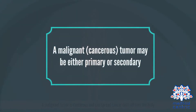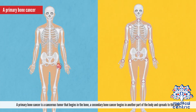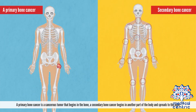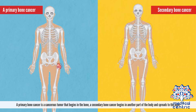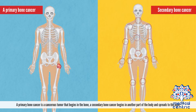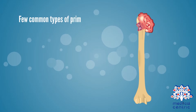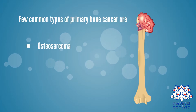A malignant or cancerous tumor may be either primary or secondary. A primary bone cancer is a cancerous tumor that begins in the bone. A secondary bone cancer begins in another part of the body and spreads to the bone.